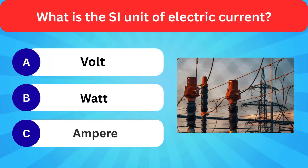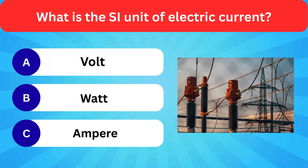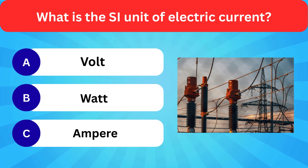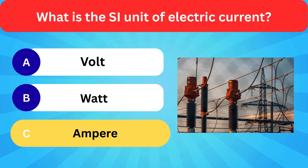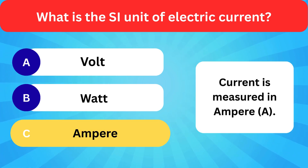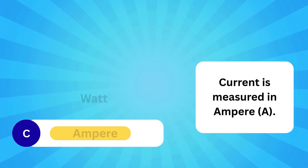What is the SI unit of electric current? Options: Volt, Ampere. Correct answer is Ampere. Current is measured in Ampere.